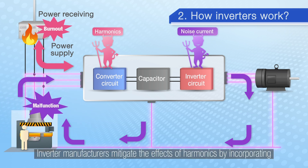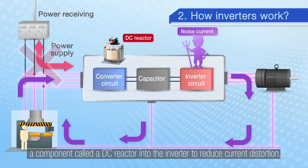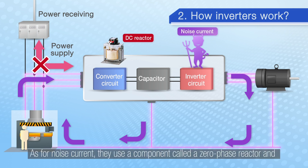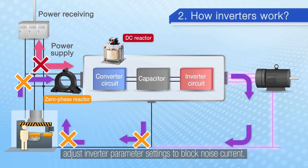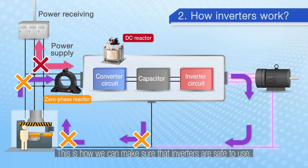Inverter manufacturers mitigate the effects of harmonics by incorporating a component called a DC reactor into the inverter to reduce current distortion. As for noise current, they use a component called a zero phase reactor and adjust inverter parameter settings to block noise current. This is how we make sure that the inverters are safe to use.